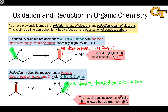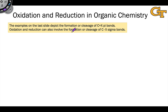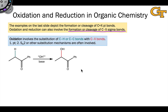One last thing to mention is that what we're seeing here is the exchange of a sigma bond for a pi bond in the oxidation example, or a pi bond for a sigma bond in the reduction example — these amount to elimination and addition of H2 respectively. When a sigma bond is replaced with a sigma bond, we go from addition or elimination to a substitution. So the formation or cleavage of C-X or C-H sigma bonds can also represent an oxidation or reduction.